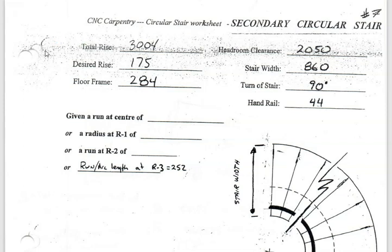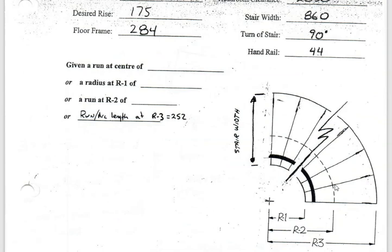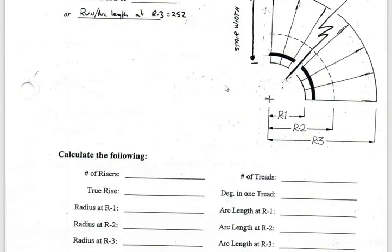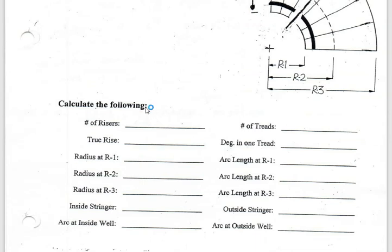We're given a few dimensions: the total rise of the stairs, a desired rise of 175, a floor frame — the framing up above the stairwell — a combination of different numbers coming up to 284, a headroom clearance of 2050, which is a code or above-code clearance for headroom, and the width of the stairs being 860.